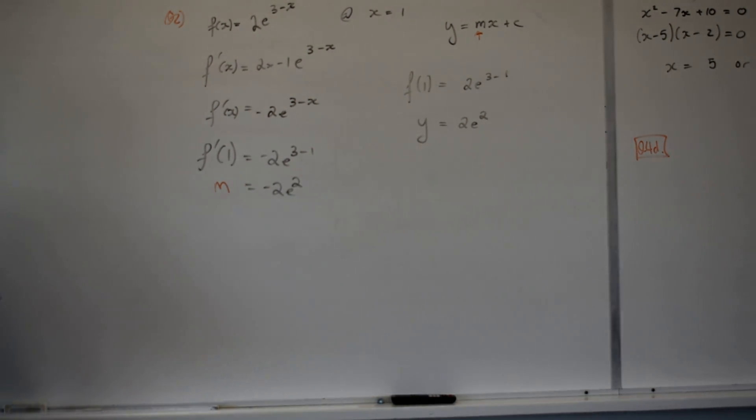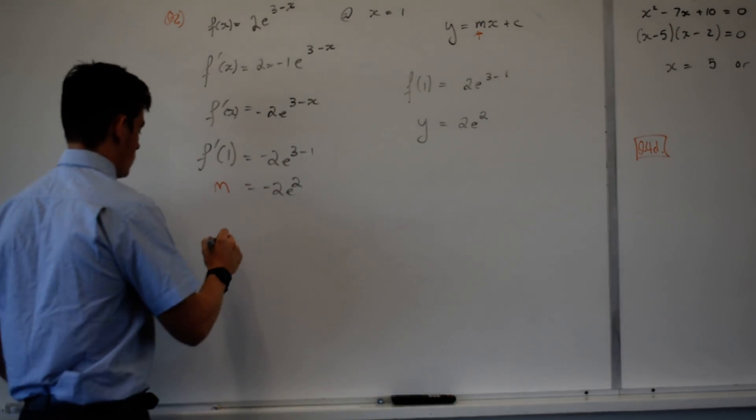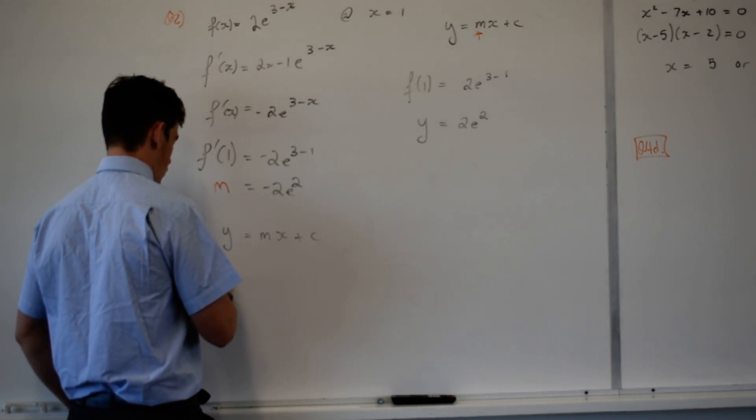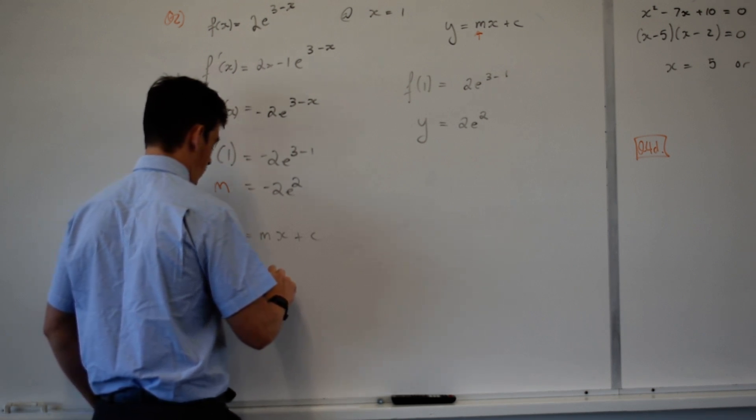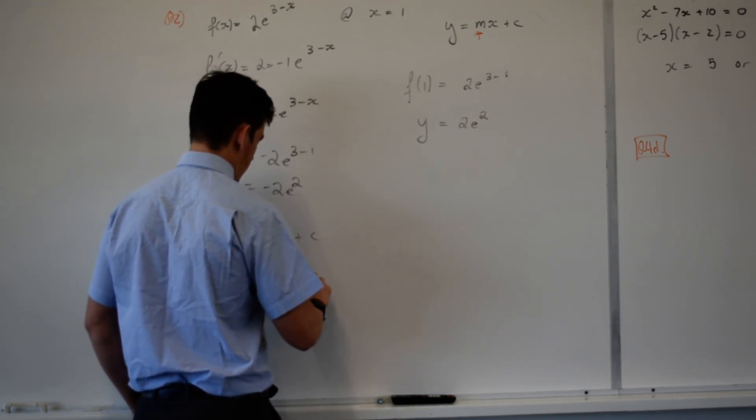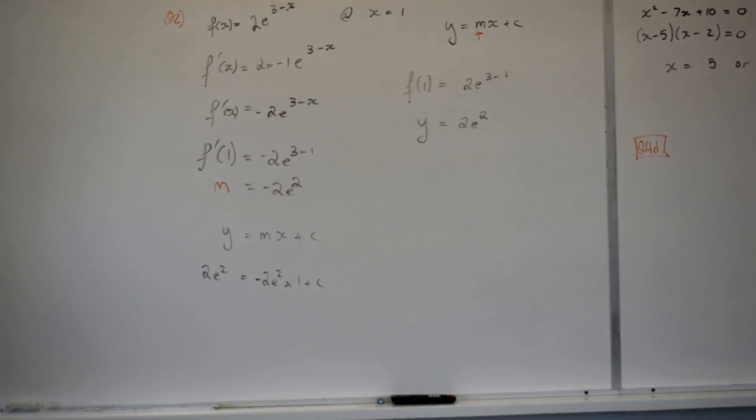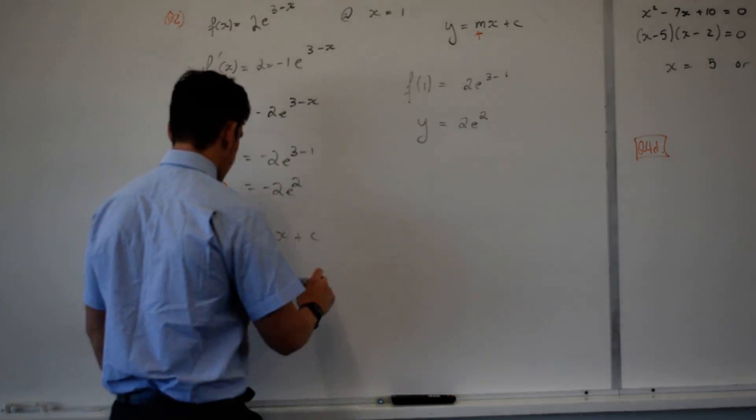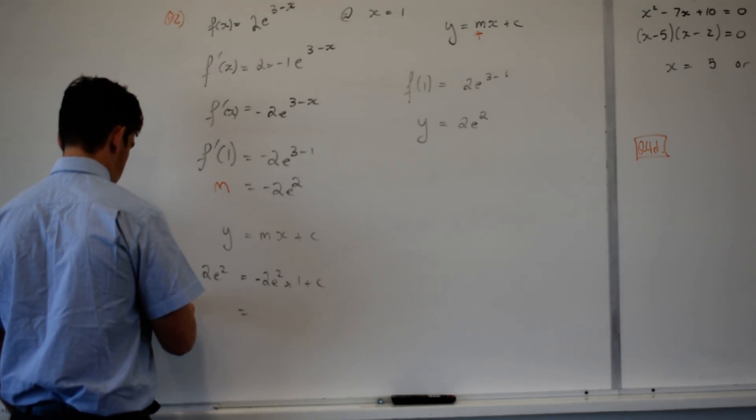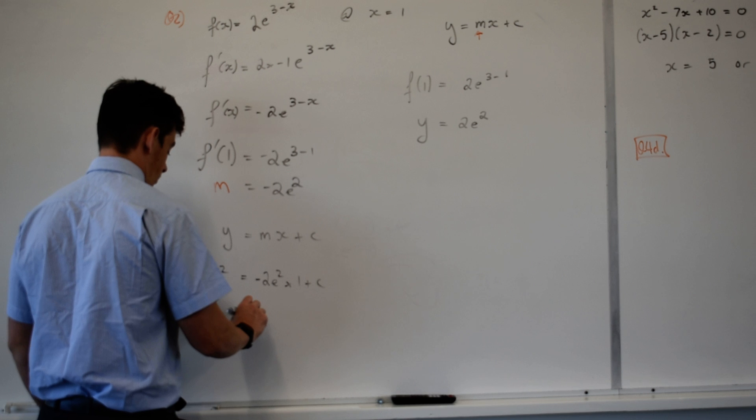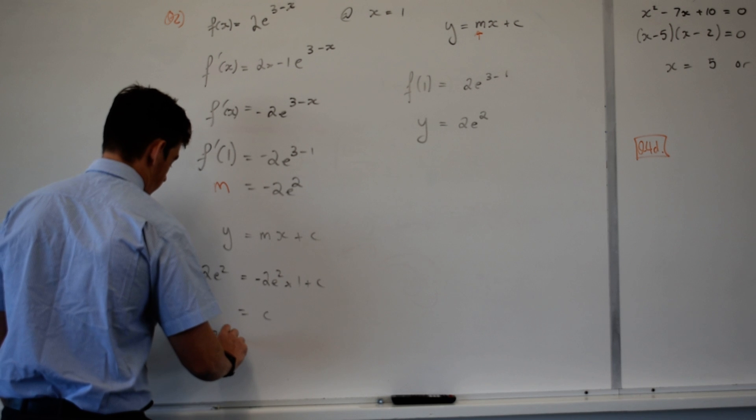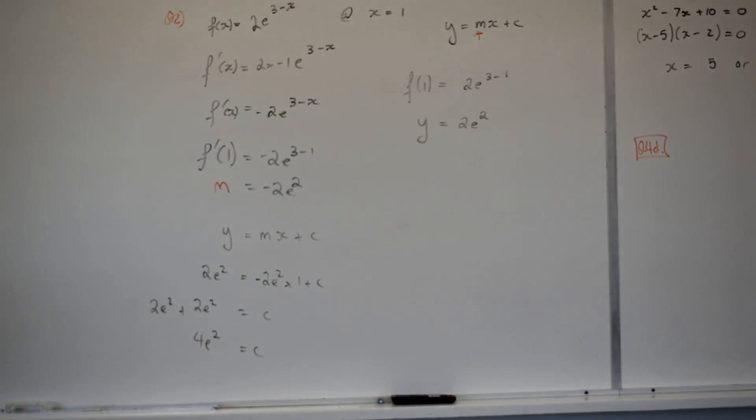So now I've got y, I've got m and I've got x. So I can sub in some values. y equals mx plus c. 2e to the 2 equals negative 2e to the 2 times 1 plus c. Next step, I want to isolate c, get it by itself. So I plus both sides by 2e to the 2, and I get c, which leaves me with 4e to the 2 equals c.